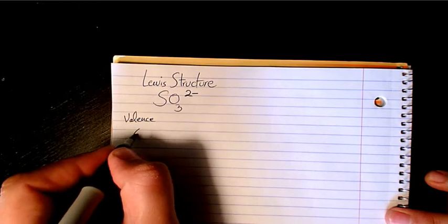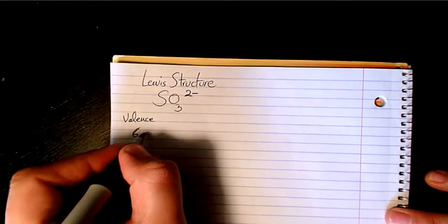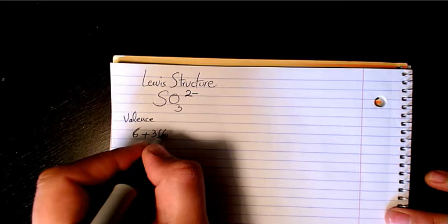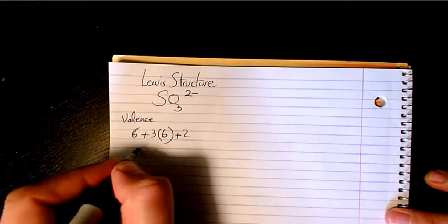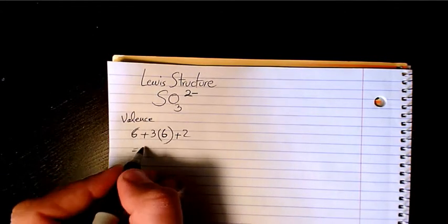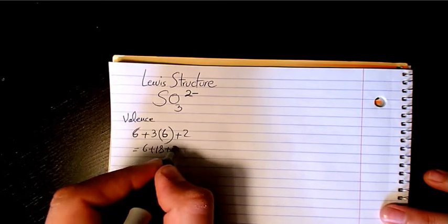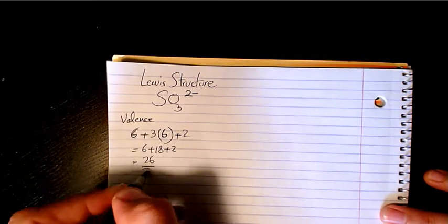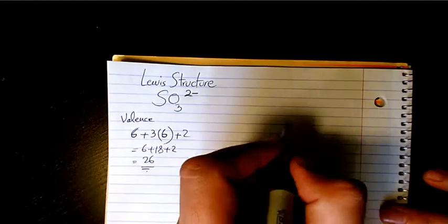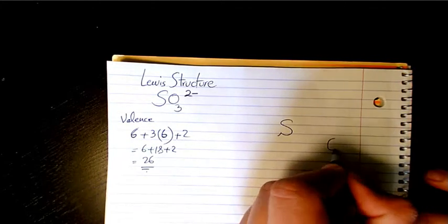We have 6 for sulfur and we have 6 for oxygen. We have three of them plus 2 in here, so that makes it 6 plus 18 plus 2 which makes it 26.